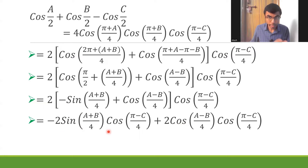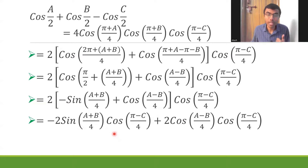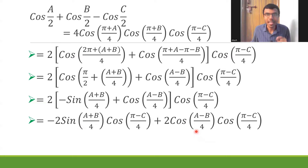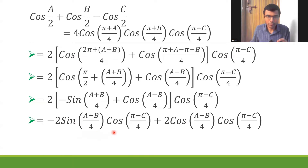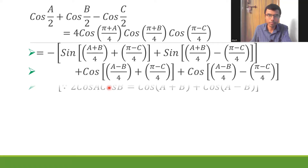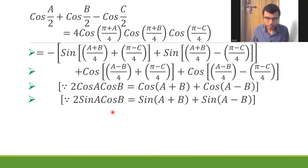Now observe: the first part is of the form 2·sinA·cosB, and 2·sinA·cosB = sin(A+B) + sin(A-B). The second part is of the form 2·cosA·cosB = cos(A+B) + cos(A-B). So in the next step I apply both these formulas.